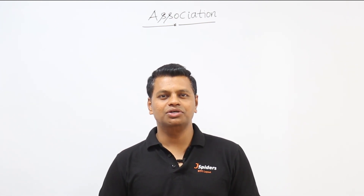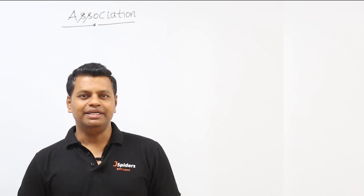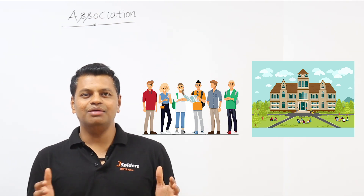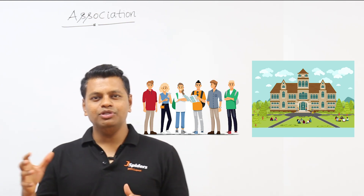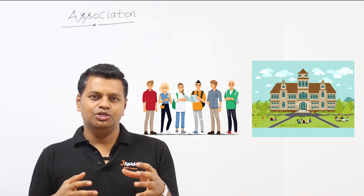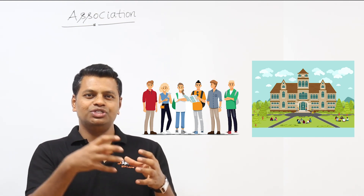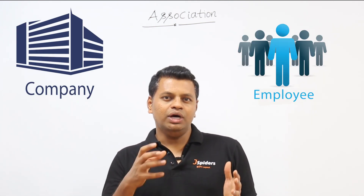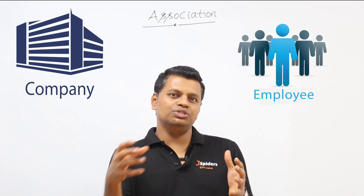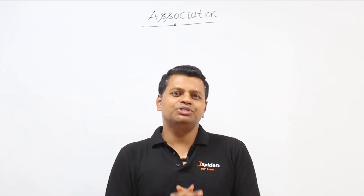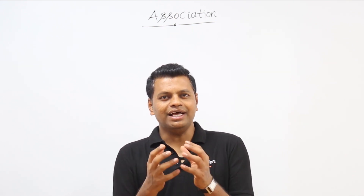In other words, association is also called a 'has-a' relationship — we say a college has a student, or a college has multiple students. So multiple student objects are associated with a college object. Similarly, a company has employees — one or multiple employees are associated with one company. This relationship between an employee and a company is called association.